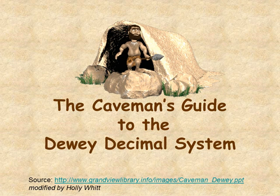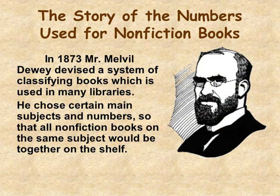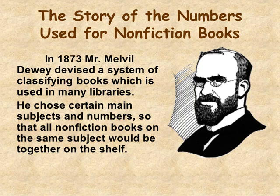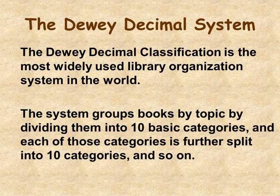The Caveman's Guide to the Dewey Decimal System by Grandview Library. In 1873, Melville Dewey devised a system of classifying books which is still used in many libraries today. He chose certain main subjects and numbers so that all non-fiction books on the same subject would be together on the shelf. Dewey's system, known as the Dewey Decimal Classification, is the most widely used library organization system in the world. It works like this.